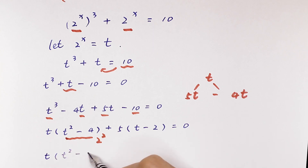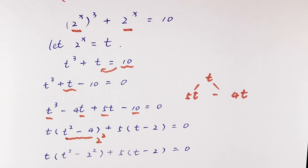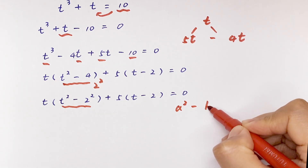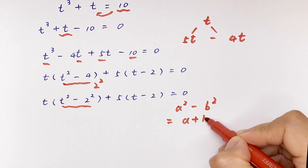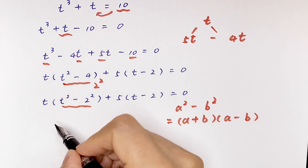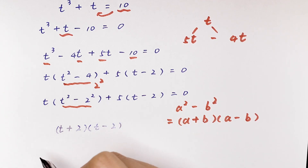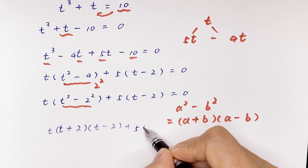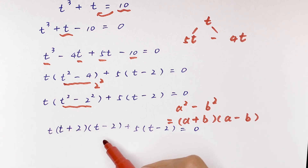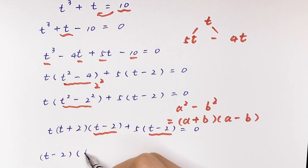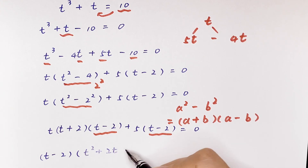We factor as t times (t squared minus 2 squared) plus 5(t minus 2) equals 0. The t squared minus 2 squared is a difference of squares, so we apply a squared minus b squared equals (a plus b)(a minus b). This gives (t plus 2)(t minus 2) plus 5(t minus 2) equals 0. Factoring out (t minus 2), we get (t minus 2)(t squared plus 2t plus 5) equals 0.